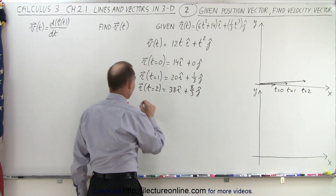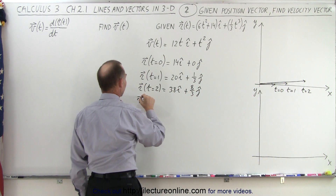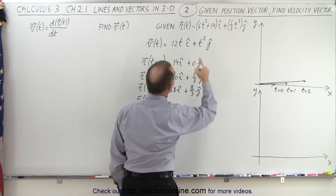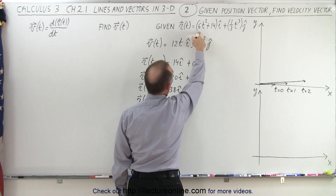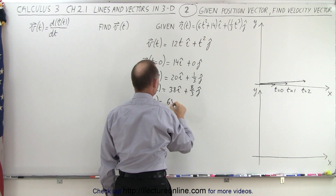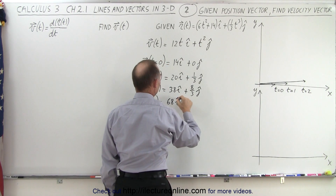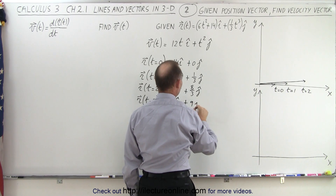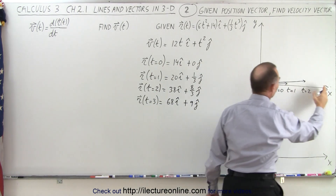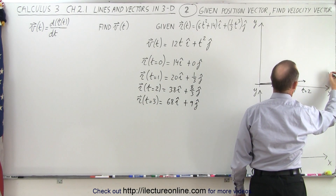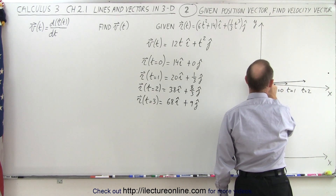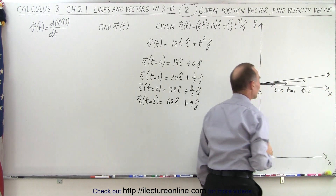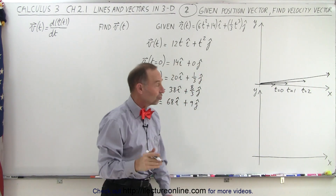For t equals 3, that gives 9 times 6 which is 54, plus 14, so 68i, and 3 cubed is 27, plus 9j. You can see we're much further out this way and a little bit up. It's not quite to scale, but you have a fairly good feel for how the position changes over time.